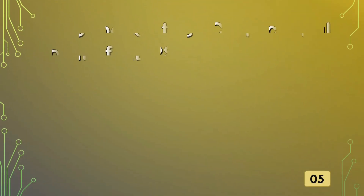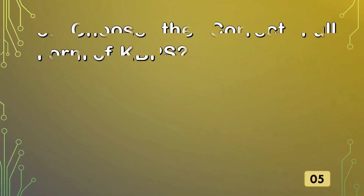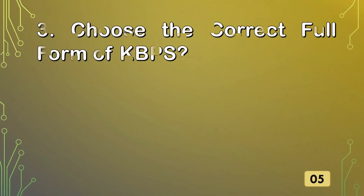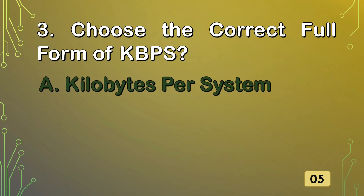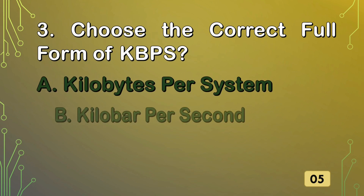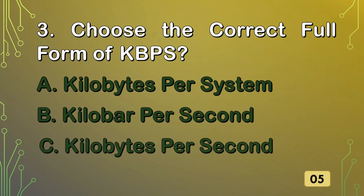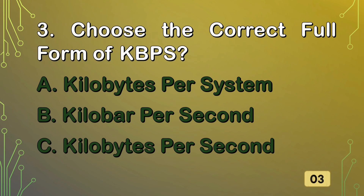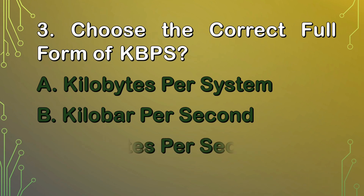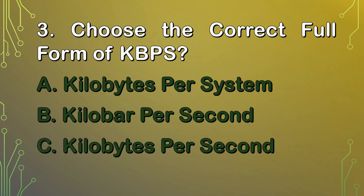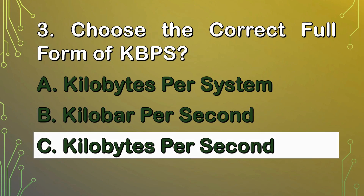Choose the correct full form of KBPS. Option A. Kilobytes Per System. Option B. Kilobytes Per Second. Or C. Kilobytes Per Second. The correct answer is Kilobytes Per Second.